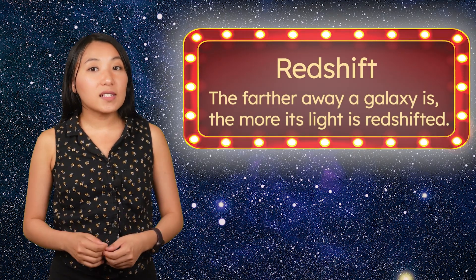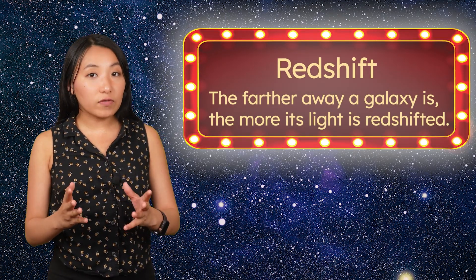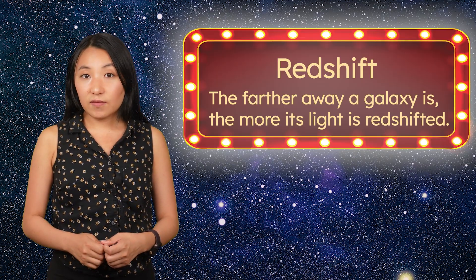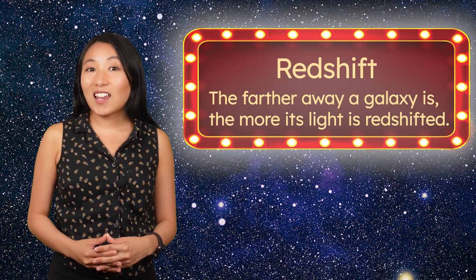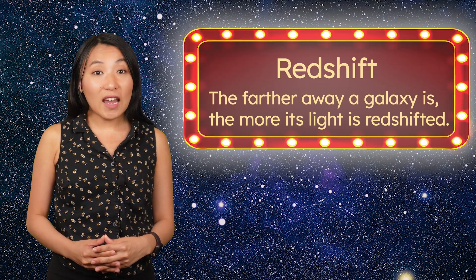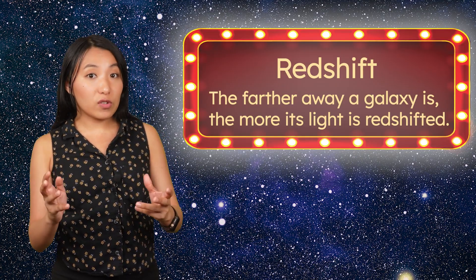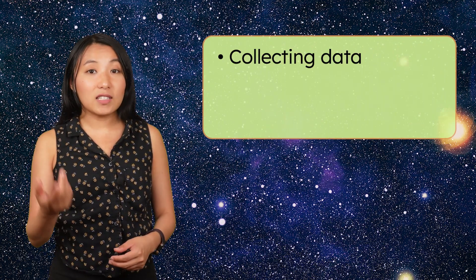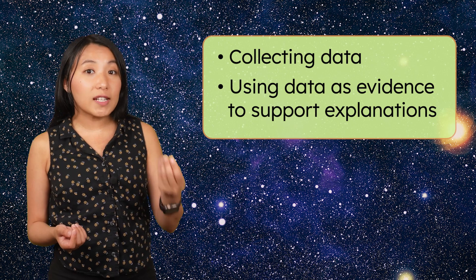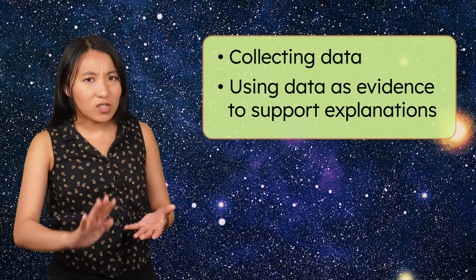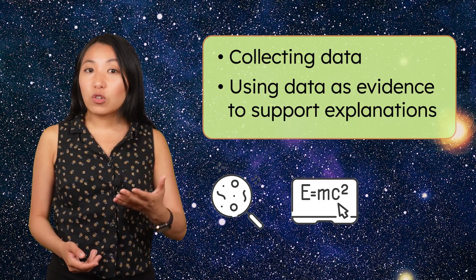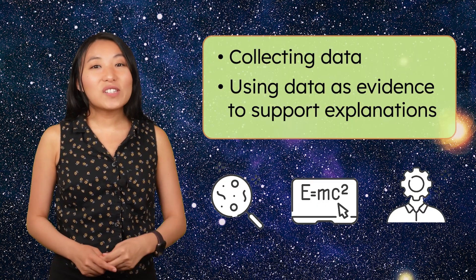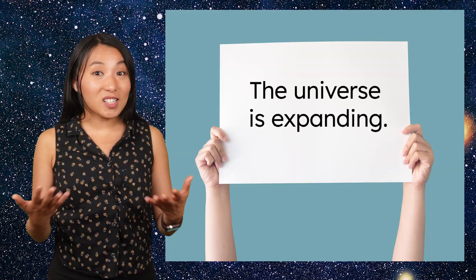The farther away a galaxy is, the more its light is redshifted, or stretched, to longer wavelengths. Hubble's data showing this pattern was clear, measurable evidence that the universe is getting bigger and is what led to the idea of an expanding universe. This is how astronomers continue to explain the universe around us, by collecting data and using the data as evidence to support explanations. It's not just a guess, it's science, backed up by patterns we can observe, measure and explain.